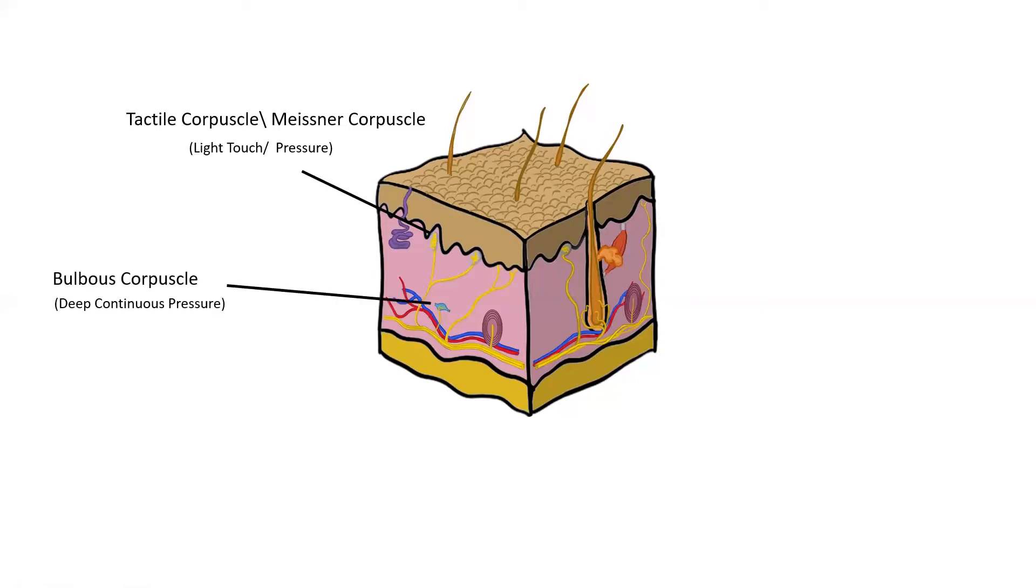Next is the bulbous corpuscle or Ruffini corpuscle. And these are responsible for deep continuous pressure. And these are slow to adapt. And I'll explain what adaptation is later on in this video.